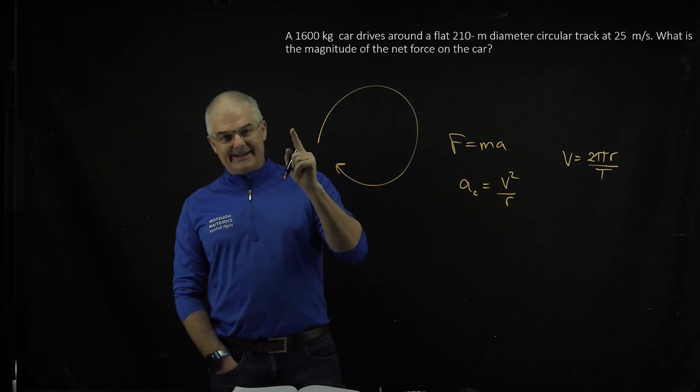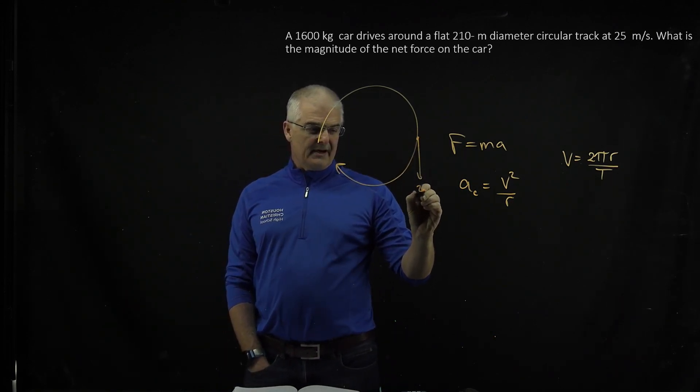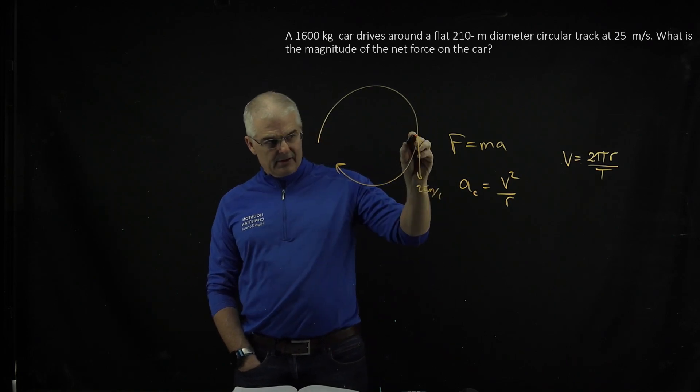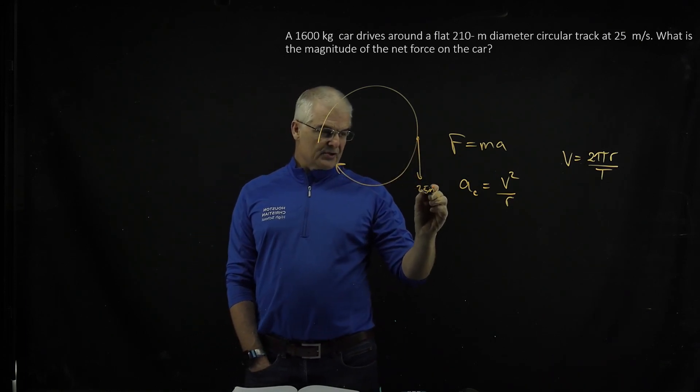Now the good news is they gave you the speed, so the object is moving at 25 meters per second. I draw it tangential because if it was to get out of the curve, it would keep going straight, but since it's on the curve, it's going to go 25 meters per second. That's your v.